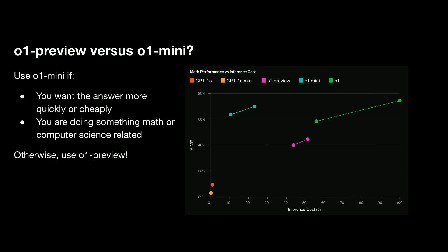There's also a question of when to use O1 preview versus O1 mini. This plot shows inference cost versus performance on IMO competition math. Interestingly, O1 mini is actually strictly better than O1 preview, because we specialized O1 mini to be a fast but performant model on math and coding. Use O1 mini if you're doing math or coding or want answers more quickly or cheaply; otherwise O1 preview is a good choice.